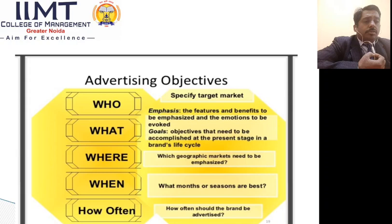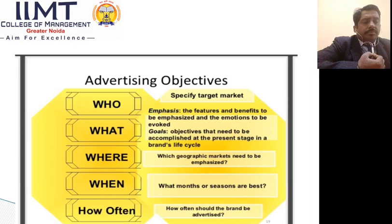The 'when' refers to seasonal products. Some companies always wait for certain seasons to increase their sales. Soft drink companies try to increase their advertisement process in summer time. Companies like Nescafe try to increase their advertisement process in winter seasons. So it depends on the product characteristics — when they have to advertise and increase their advertisement process. How often the brand should be advertised also depends on the product's characteristics and qualities. If a product has good qualities and features, it can become a brand very soon.